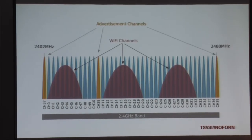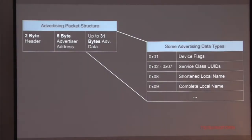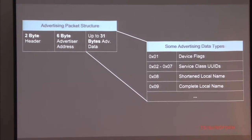The remaining 37 channels are used when a device is connected and sending data back and forth - less relevant for our application since we're trying to figure out what these devices are. When you receive an advertising payload you have a very standard structure: a 2-byte header that tells you the type of advertisement received - an indirect advertisement, a direct advertisement telling your device it can connect to something, or advertising a capability like a beacon.